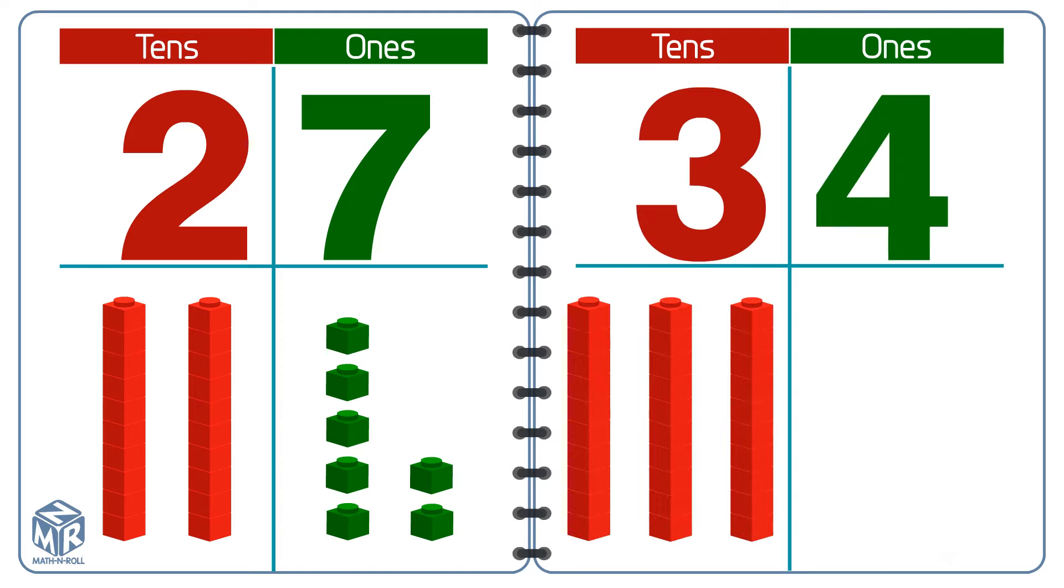The 3 in 34 means three 10s, or 30. The 4 in 34 means four 1s. We can write three 10s and four 1s as 34.